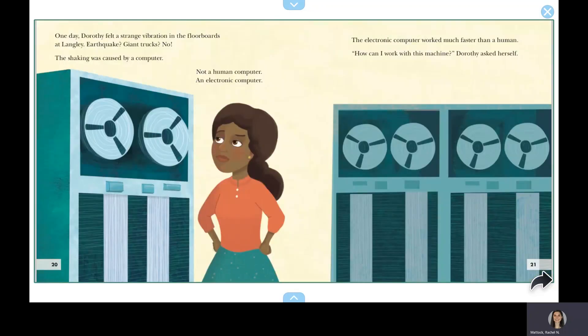One day, Dorothy felt a strange vibration in the floorboards at Langley. Earthquake? Giant trucks? No! The shaking was caused by a computer. Not a human computer. An electronic computer. The electronic computer worked much faster than a human. How can I work with this machine? Dorothy asked herself.